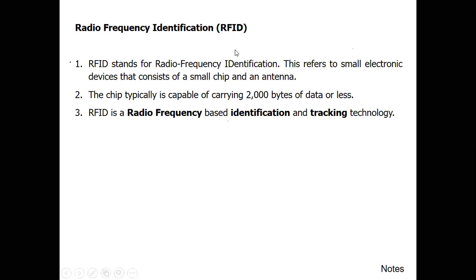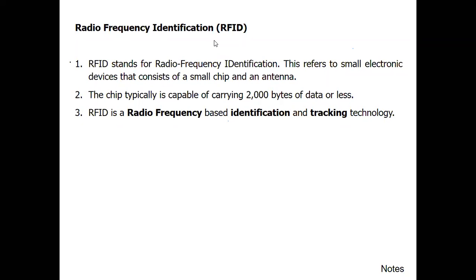RFID stands for Radio Frequency Identification. It refers to a small electronic device that consists of a small chip and an antenna. This chip is typically capable of carrying 2000 bytes of data. RFID is a radio frequency-based identification and tracking technology that works on radio frequency.